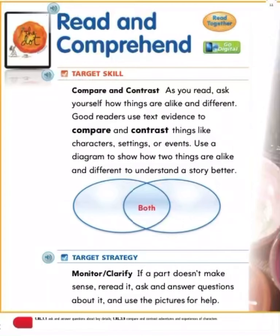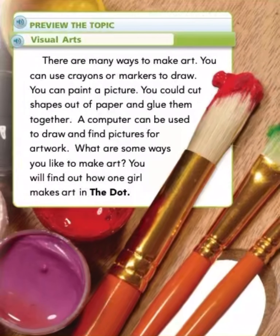Target strategy: Monitor and clarify. If a part doesn't make sense, re-read it, ask and answer questions about it, and use the pictures for help. Preview the topic: Visual arts. There are many ways to make art. You can use crayons or markers to draw, paint a picture, cut shapes out of paper and glue them together, or use a computer to draw and find pictures for artwork. What are some ways you like to make art?